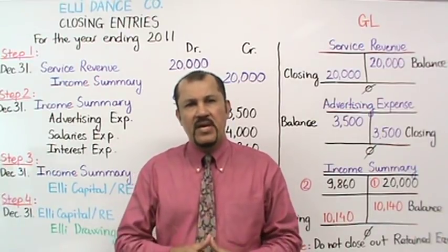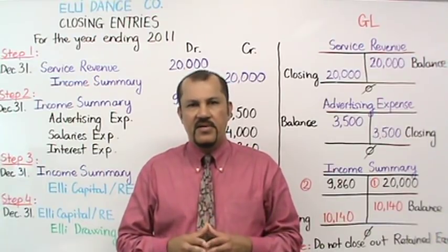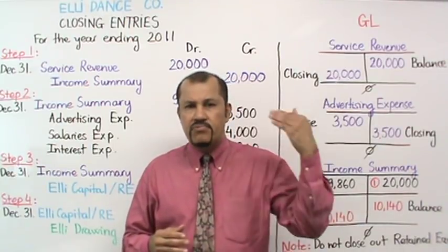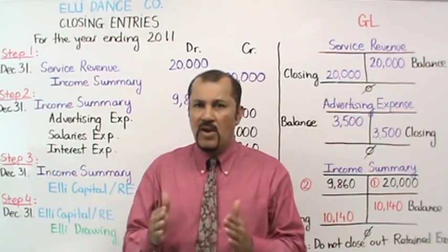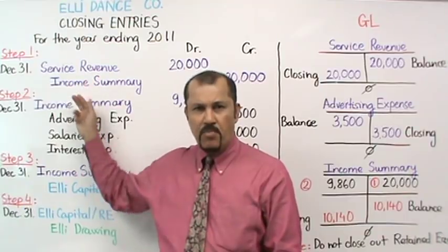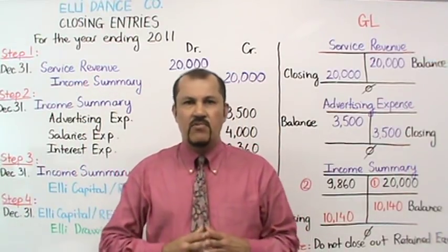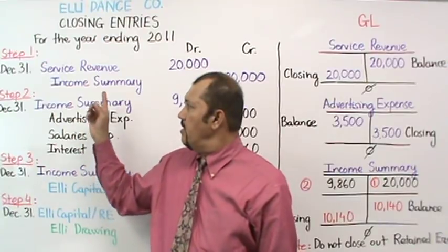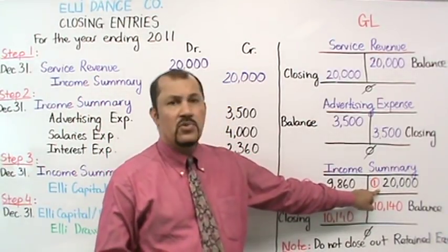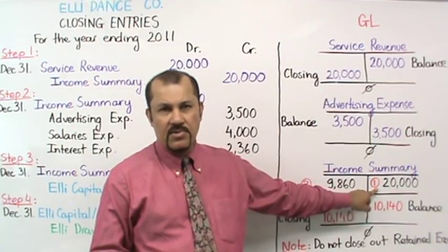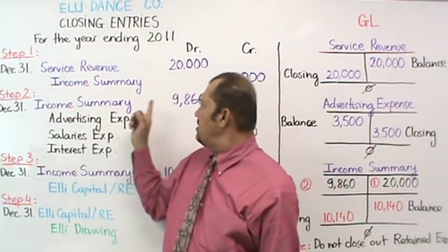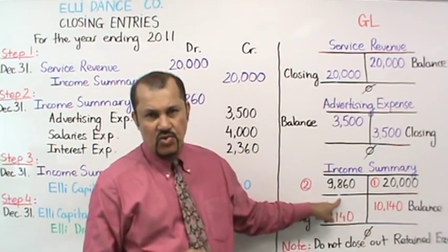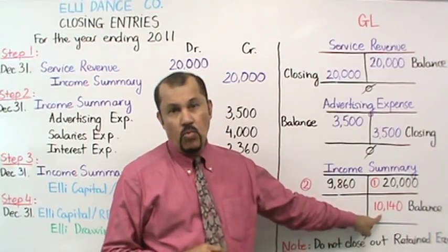Next, step three is to close out your income summary account. However, to close out your income summary account, we first need to calculate its balance. Remember, prior to the closing process, your income summary account had a zero balance. However, based on entry number one and entry number two from steps one and two respectively, your income summary account has some activity now. From entry number one, the income summary received a credit. Then from entry number two, there was a debit to income summary of $9,860 that got posted as a debit to your income summary ledger account. This creates a balance of $10,140 credit.